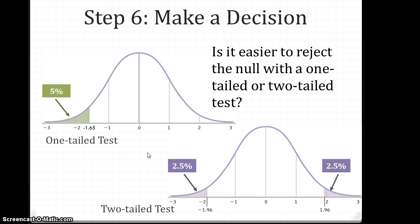The question is, is it easier to reject the null hypothesis with a one-tailed test or a two-tailed test? Comparatively speaking, if we guess the right direction, this cutoff for the two-tailed test is negative 1.96. It's nearly, just about, two standard deviations below the mean.